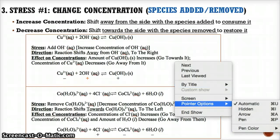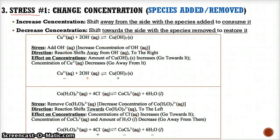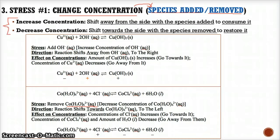The first stress that can cause equilibrium to shift is changing the concentration. When you change concentration, circle the species added or removed to determine which direction to go. If you increase the concentration of a species, you have too much of it — that's the stress. So to get rid of that stress, you have to shift away from the side with the species added to consume it.